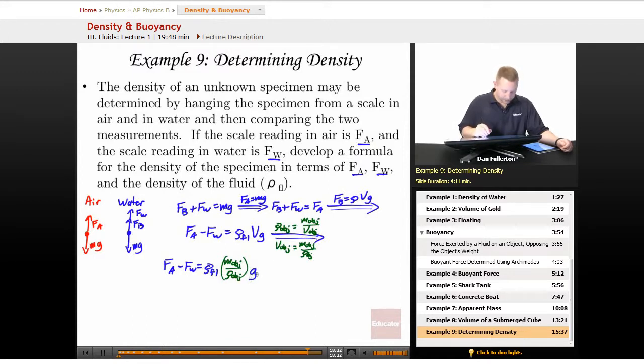Now it's just a little bit of algebra to prove that the density of the object is going to be equal to the density of our fluid times the mass of the object times G, divided by FA minus FW. Just a little bit of rearrangement to get the density of the object all by itself.